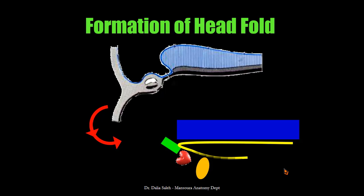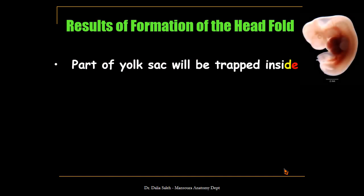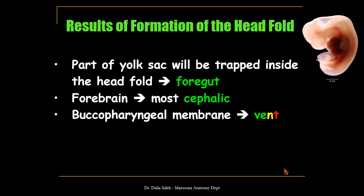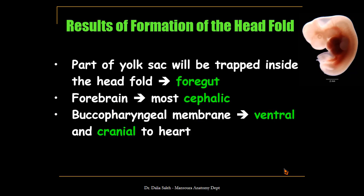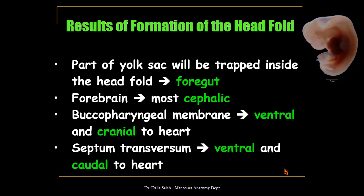The endodermal lining of the yolk sac — part of it will be trapped in this cephalic or head fold. So, what are the results of formation of the head fold? Part of the yolk sac will be trapped inside the head fold forming the foregut. The forebrain will become the most cephalic part of the embryo. The buccopharyngeal membrane will become ventral and cranial to the heart. The septum transversum, the developing diaphragm, will move and become ventral and caudal to the heart — this is the normal anatomic arrangement of structures in the human being.